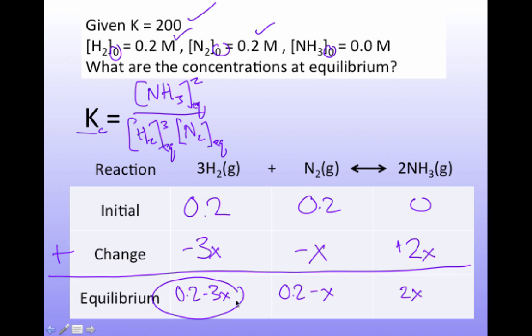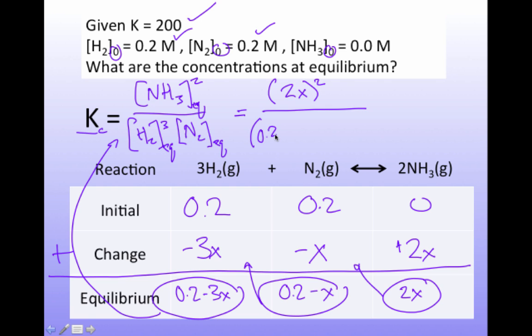Equilibrium concentration of H₂, plug it into the expression. Equilibrium constant of N₂, plug it into the expression. Equilibrium constant of NH₃, plug it in the expression. What do I get? Well, NH₃ is 2X squared. Hydrogen is 0.2 minus 3X cubed. And 0.2 minus X is equal to 200. And all we have to do now is solve for X. And if we solve for X, we'll know the concentrations everywhere.